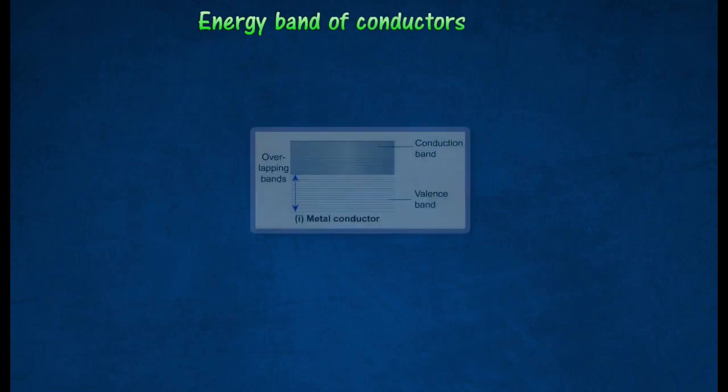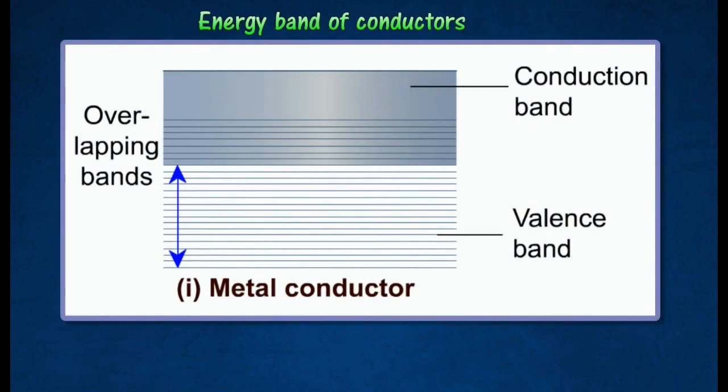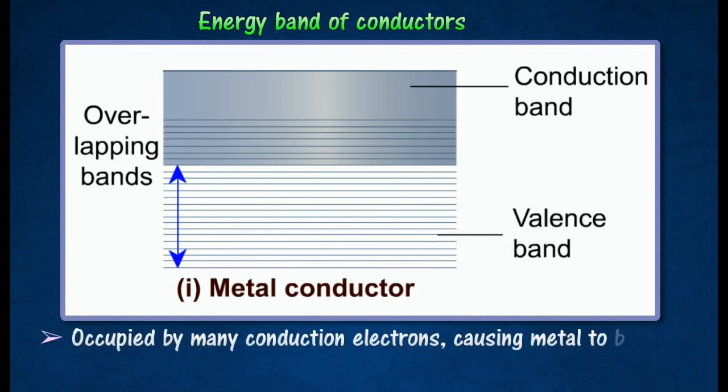In some metals, the conduction band and the valence band may overlap. Thus, the conduction band is occupied by many conduction electrons, causing these metals to become good conductors of electricity.